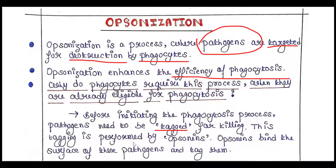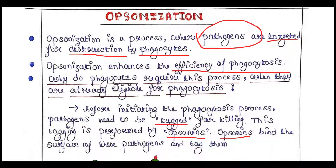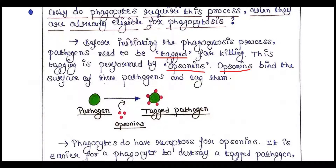This tagging is performed by opsonins. Opsonins are proteins that can mark or tag pathogens for the process of phagocytosis. These opsonins bind the surface of pathogens and tag them.